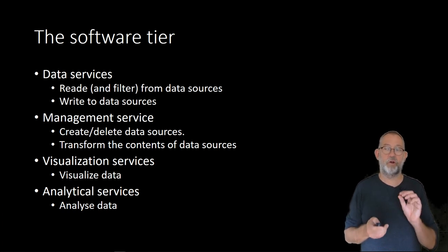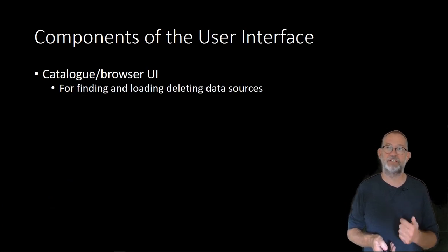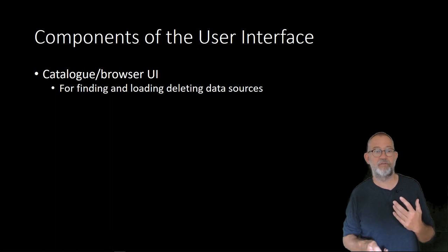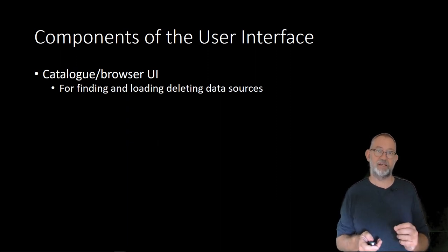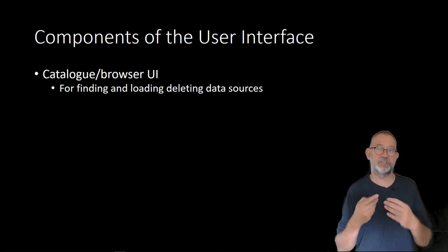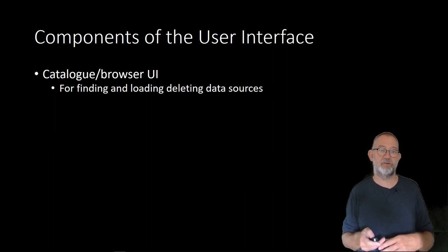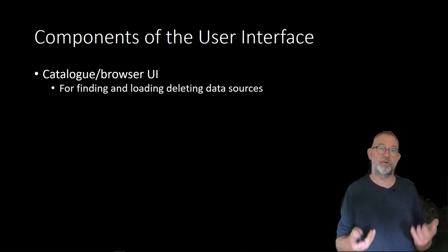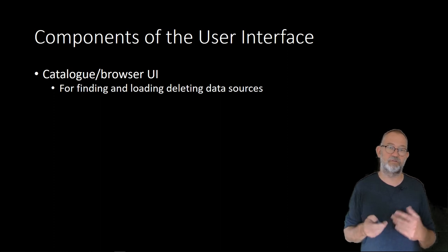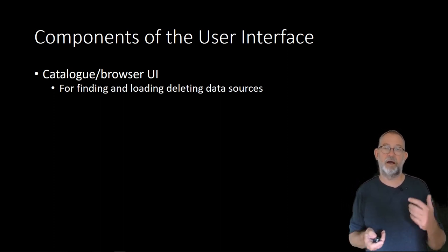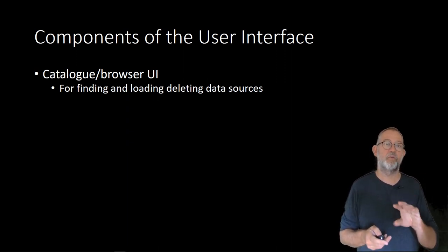That's the basic workings of the software, but of course they need some form of user interface. Most GIS applications will have what they call a catalog or a browser — a user interface for finding data or finding places where you want to save your data sources. In ArcGIS they call them catalogs, in QGIS they call them browsers, but they do the same thing: they go and find where a specific data source is located.